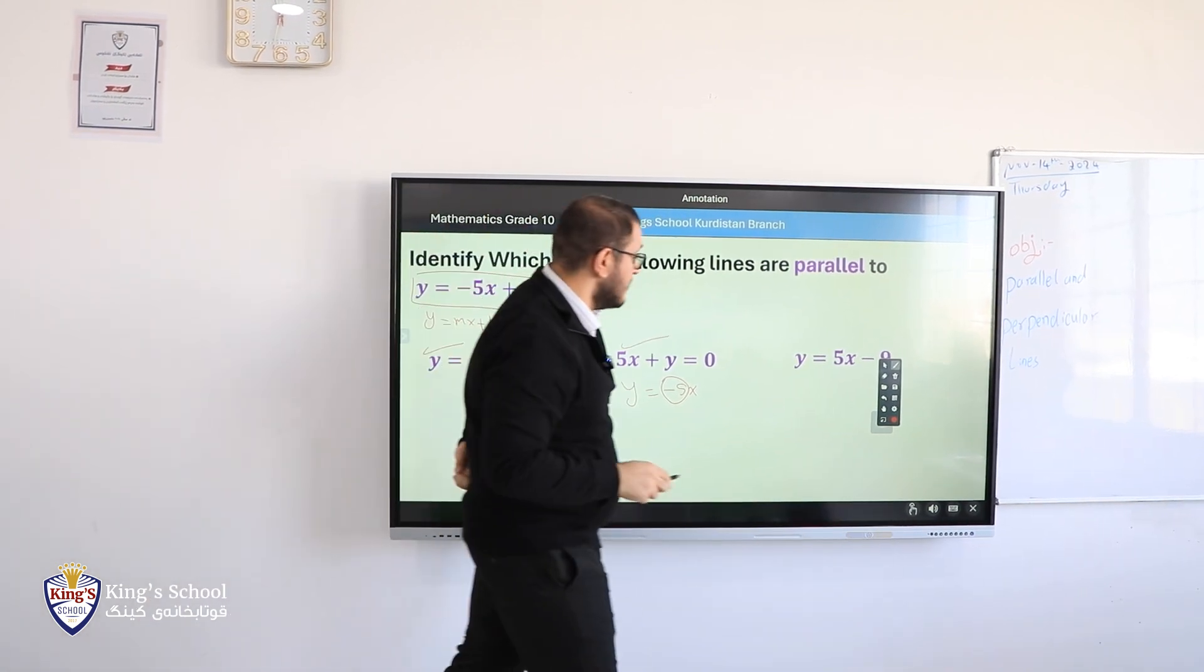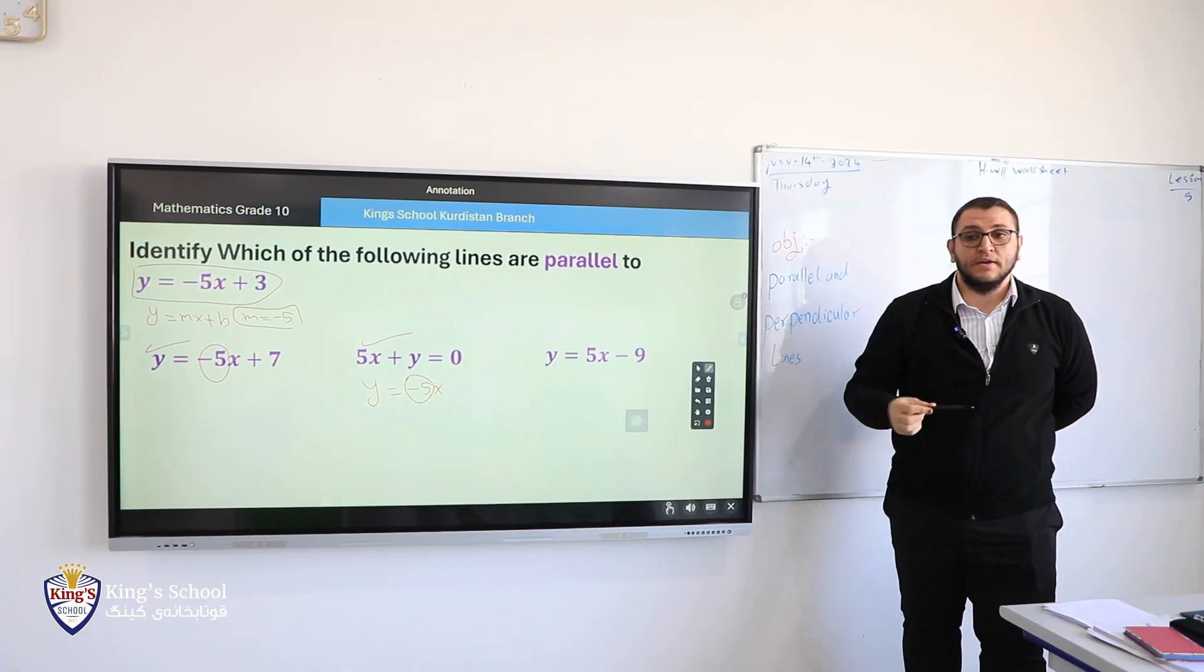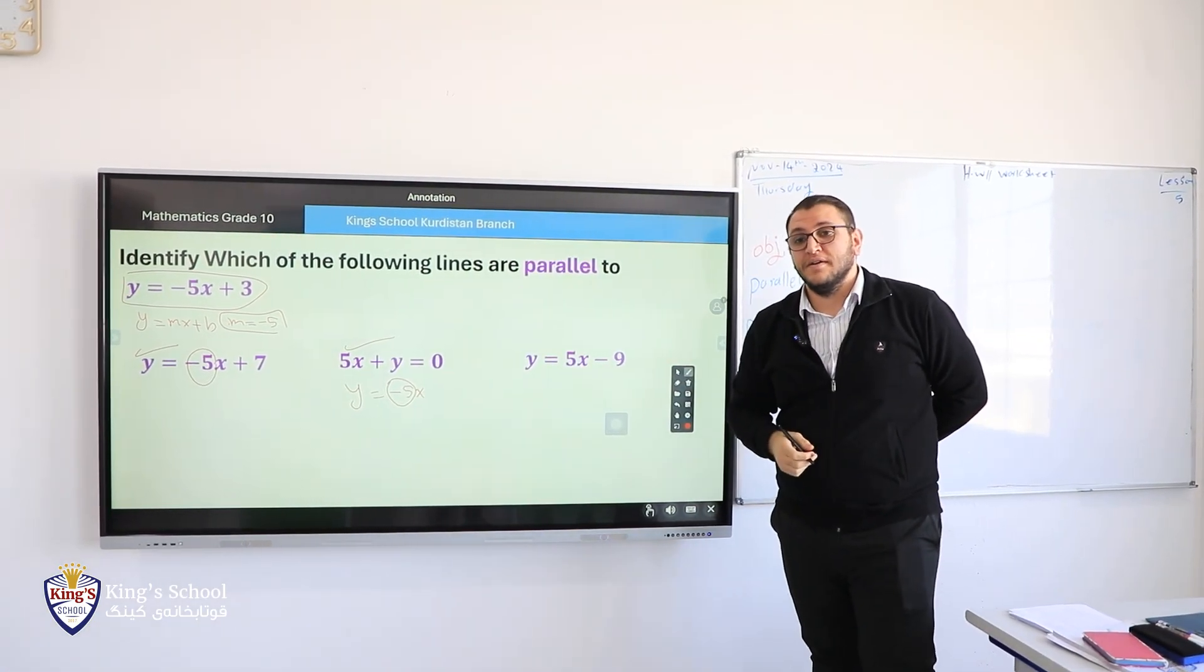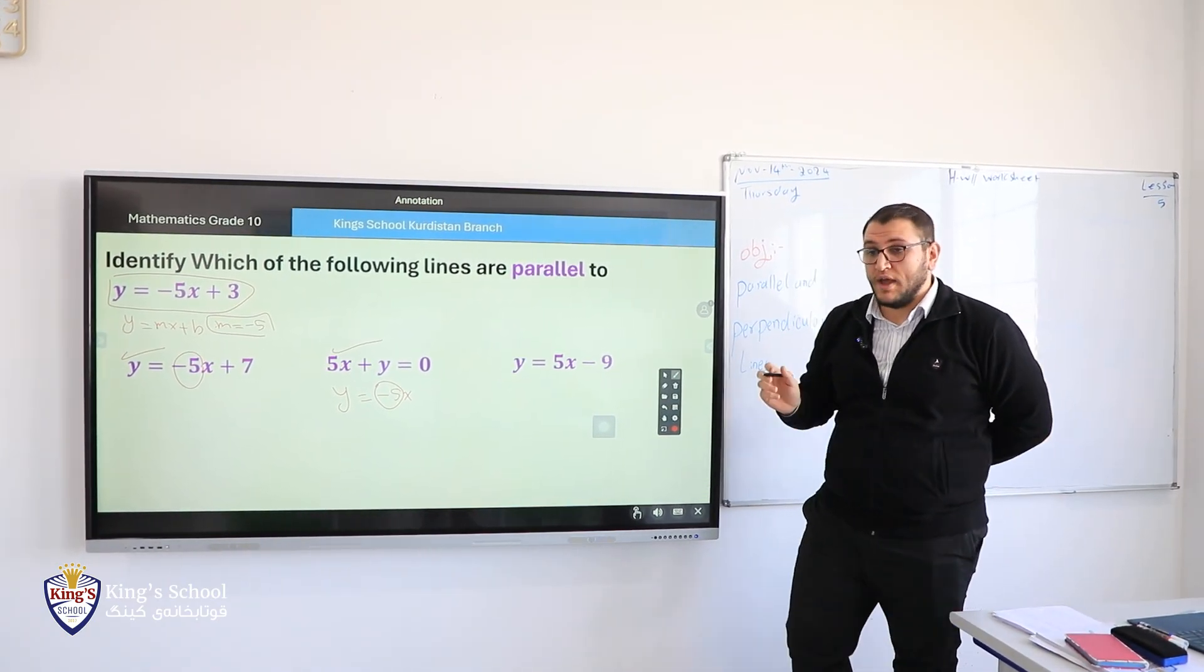Third one. Who can tell me the third one? Are this one parallel or not? Y equals 5x minus 9. New student. Mohamed, what do you say? Are they have the same slope? No. Excellent.